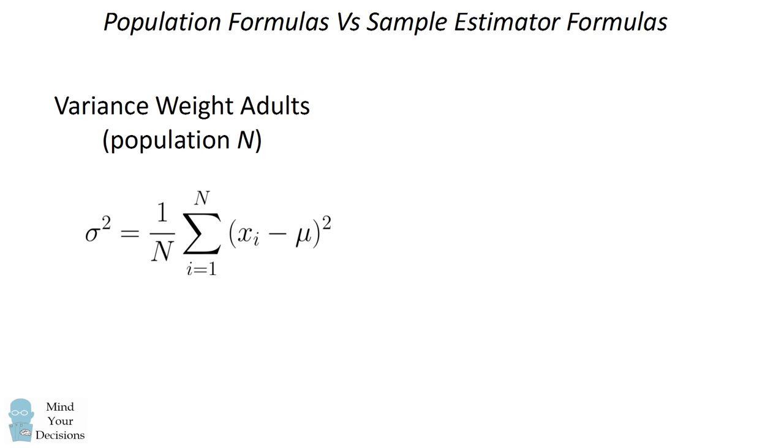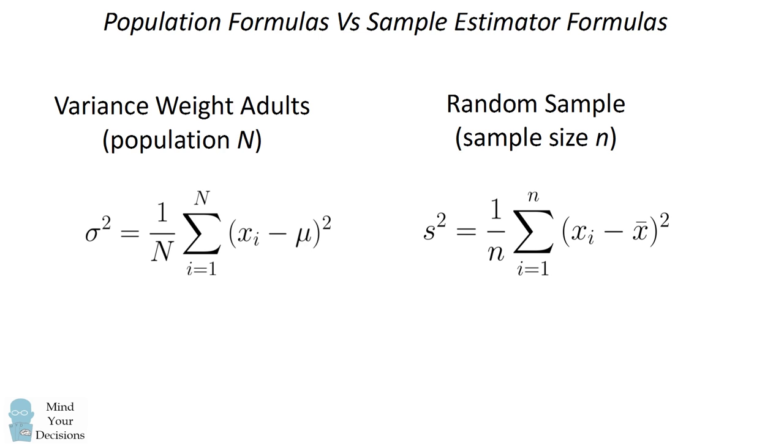That will give you the variance of the population. So if you wanted to do the same thing in a random sample, you might think you could just substitute little n wherever you see big N, and instead of knowing the population mu parameter mean, we would substitute the sample mean. So you would think this sample estimate of the variance would be a true and valid formula for estimating the variance in the population.